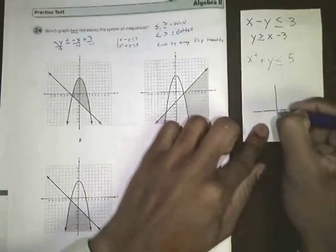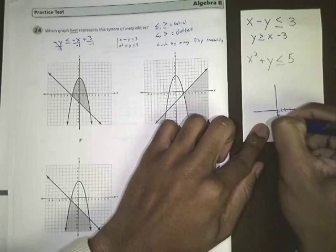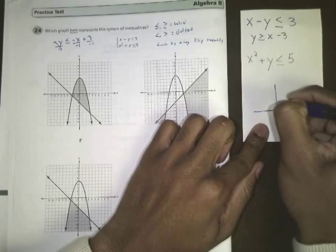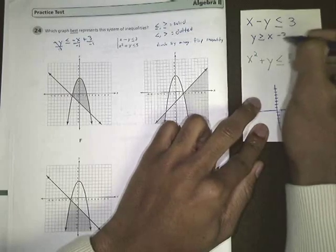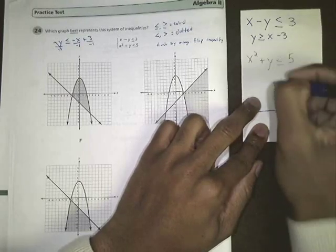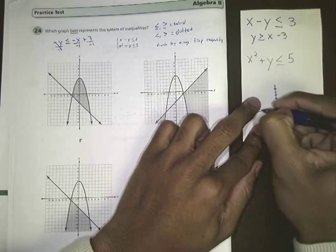In order for us to start trying to graph what this problem is going to look like, this is in slope-intercept form now, where we have to start with this negative 3. So we start on our y-axis at negative 3.